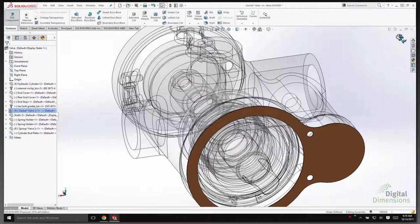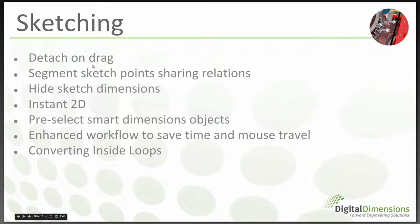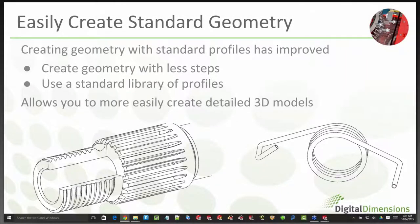To recap SolidWorks 2016 sketching enhancements: Detach on Drag, the ability to edit segment sketches, hiding sketch dimensions, the new Instant 2D capability similar to Instant 3D, pre-selection for different dimension types, enhanced workflow so the toolbar doesn't disappear, and converting inside loops with Convert Entities. Next, Gordon will present the geometry creation section.